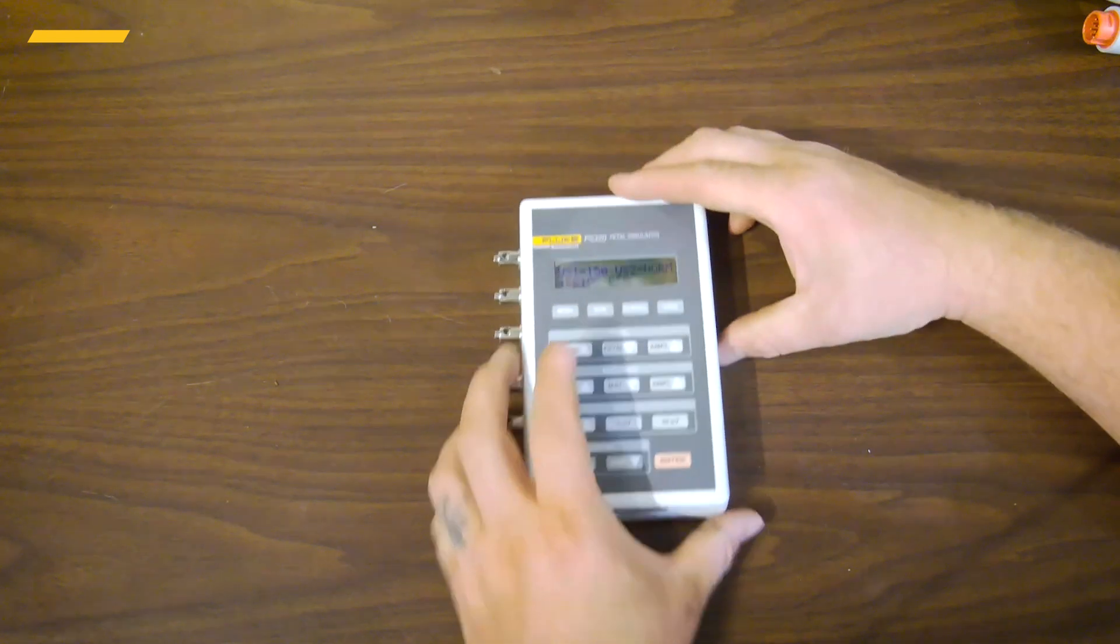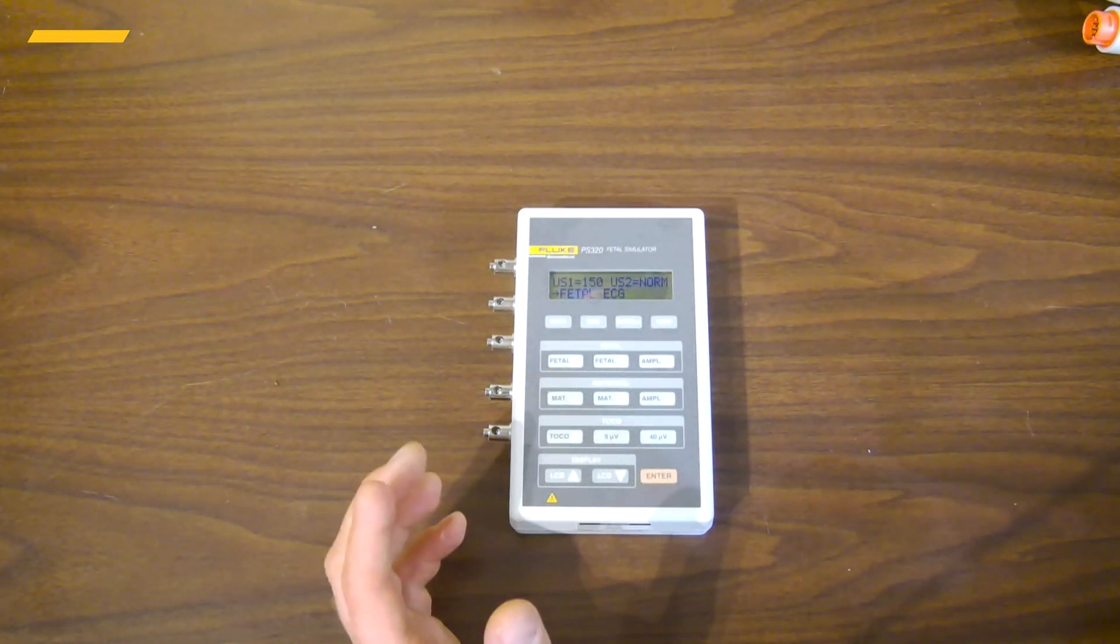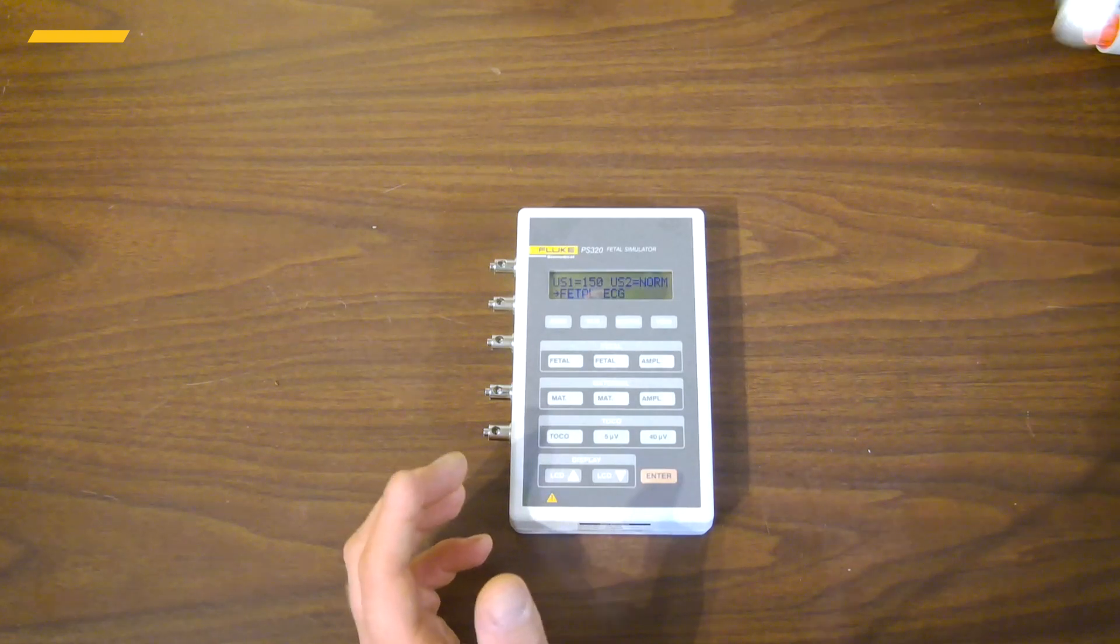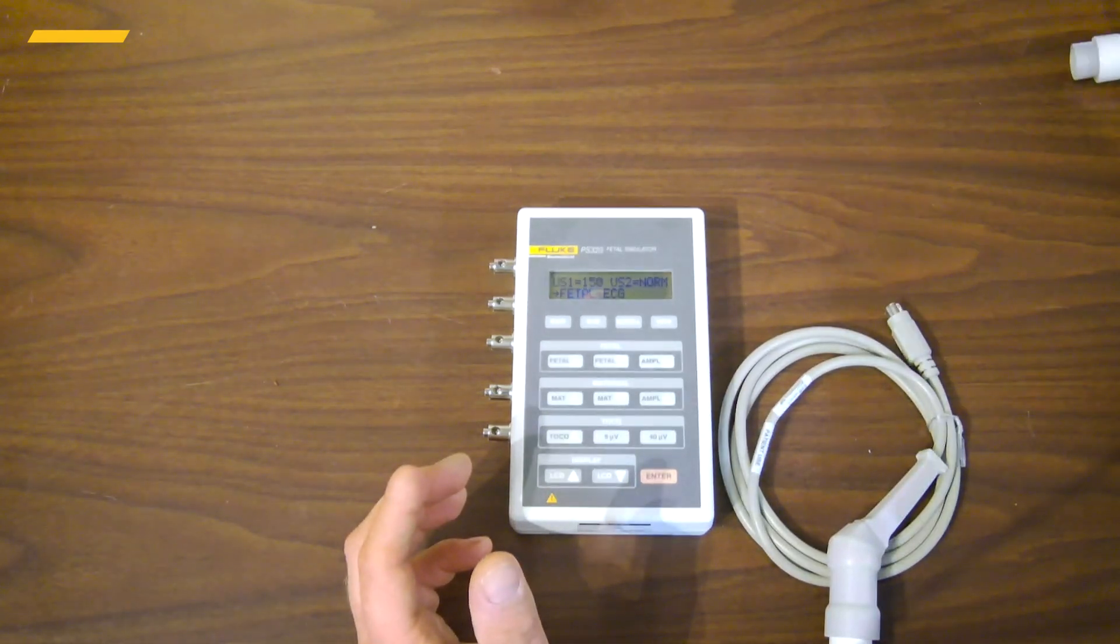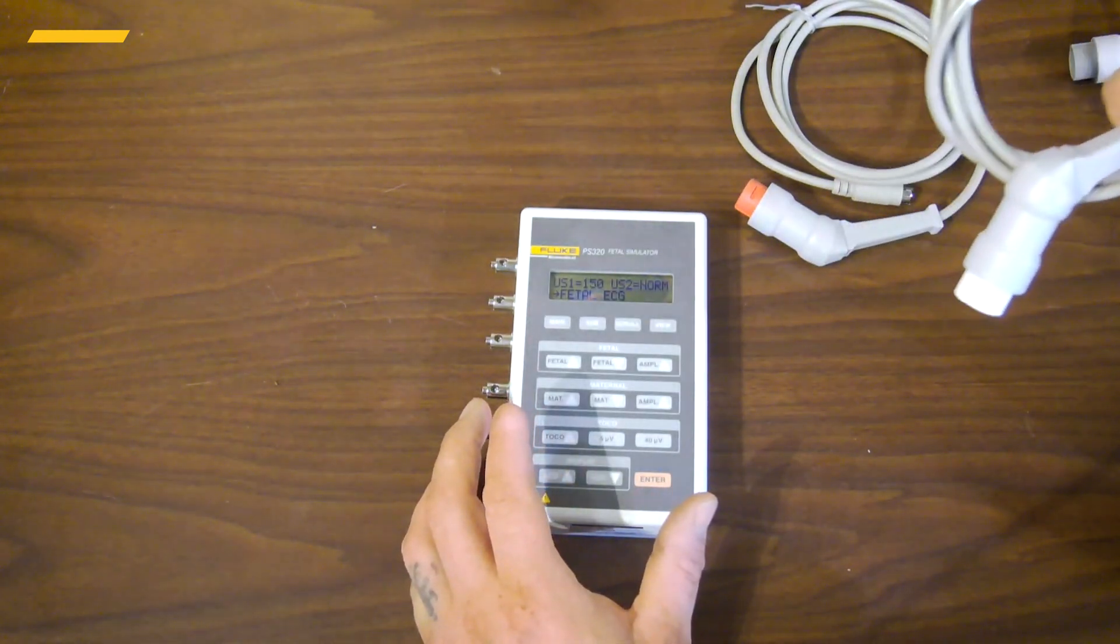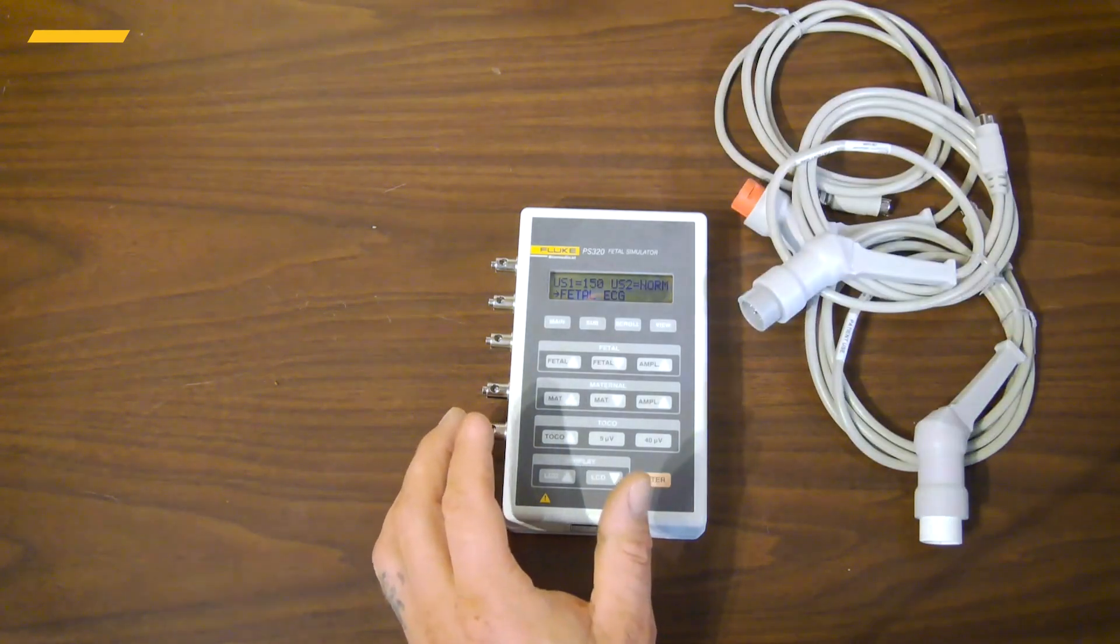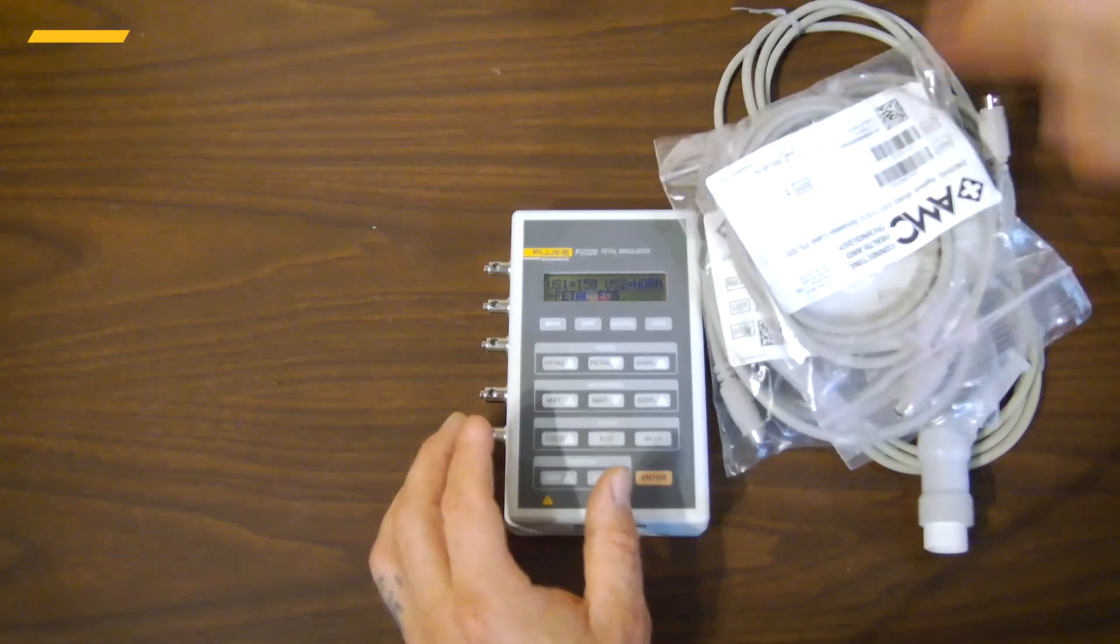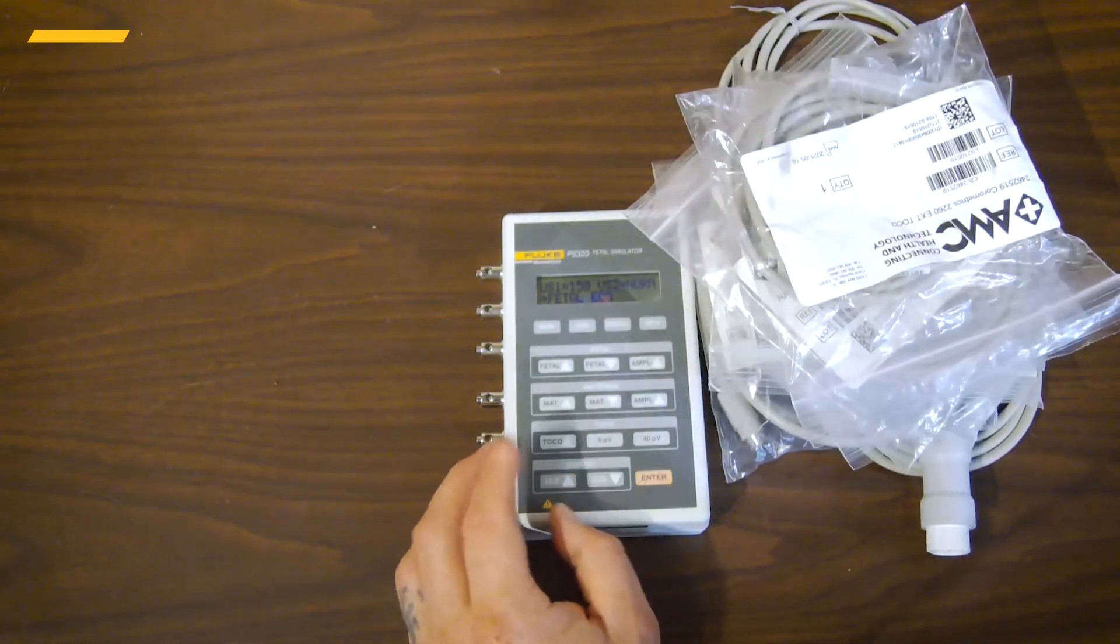So the PS320 can be either bought by itself or it can be bought in kits for specific fetal monitors. So here are some of these accessories that you can either purchase in those kits or by themselves. And what you do is connect them into it. So we have different ones for core metrics and for Philips as well as other monitors. And you can tell there is a lot of potential different cables for the PS320.